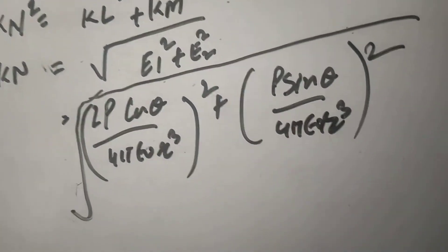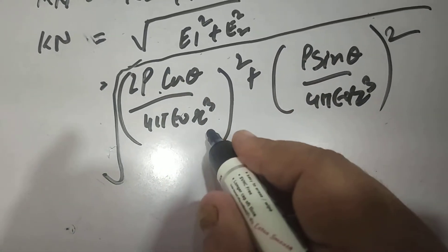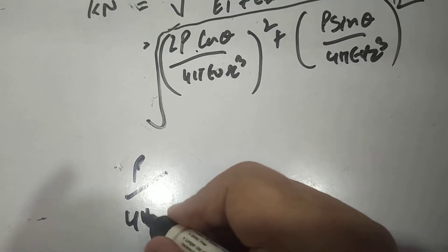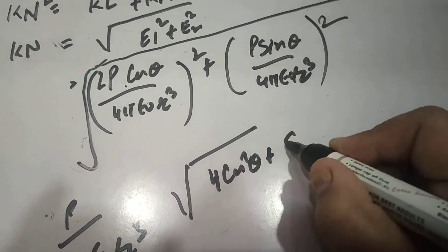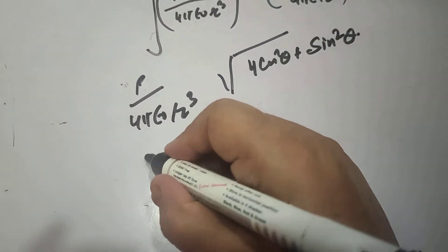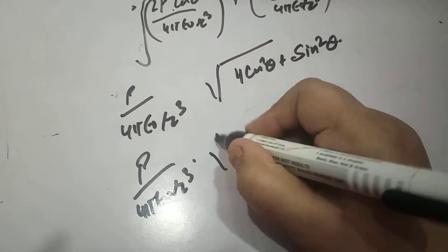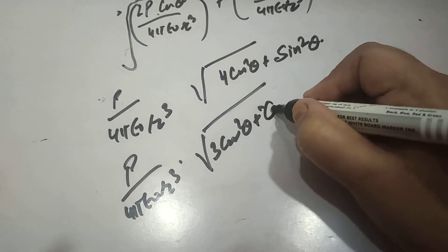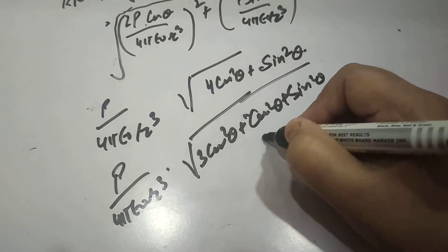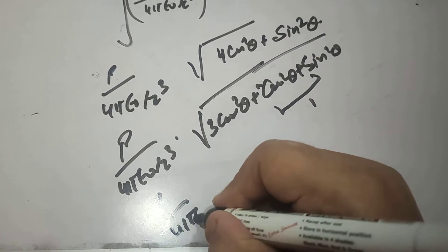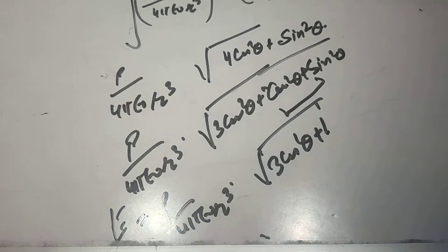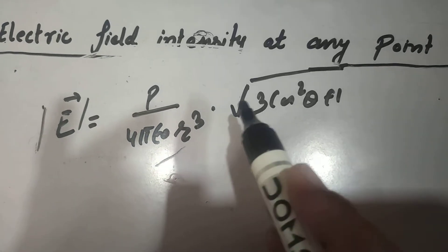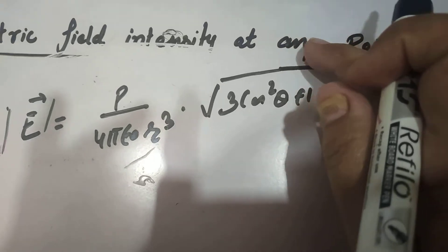Taking P upon 4 pi epsilon naught r cube common, we are left with the square root of 4 cos squared theta plus sin squared theta. This can be broken into the square root of 3 cos squared theta plus cos squared theta plus sin squared theta. Since cos squared theta plus sin squared theta equals 1, this becomes P upon 4 pi epsilon naught r cube times the square root of 3 cos squared theta plus 1. So E equals P upon 4 pi epsilon naught r cube times root of 3 cos squared theta plus 1, and the direction is along KN.